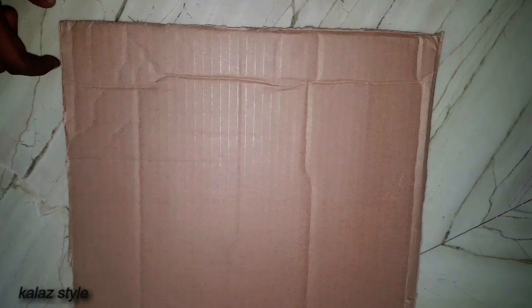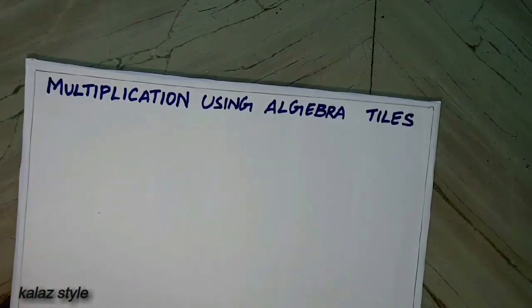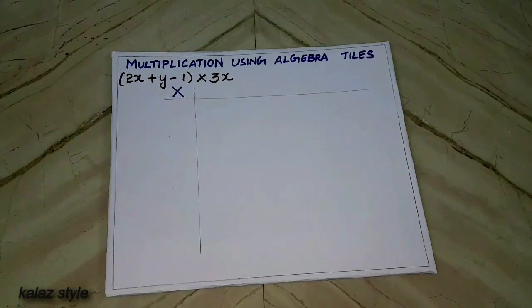Take a cardboard and cover this with a chart. Draw four sides margin and start writing your title. Write the question and separate into two partitions.